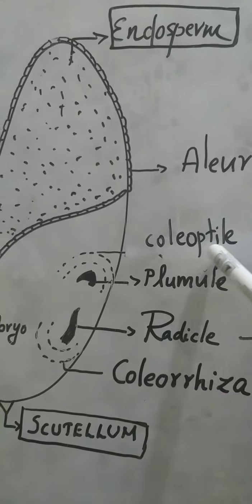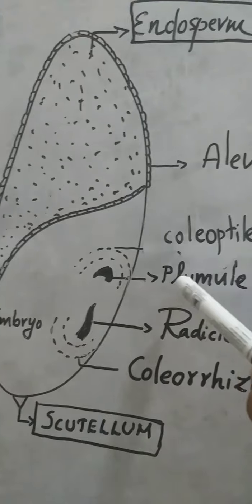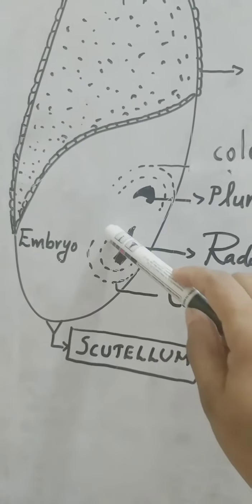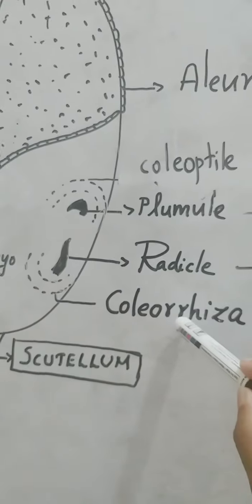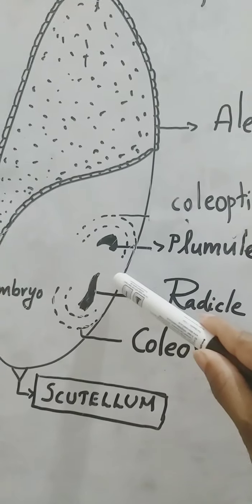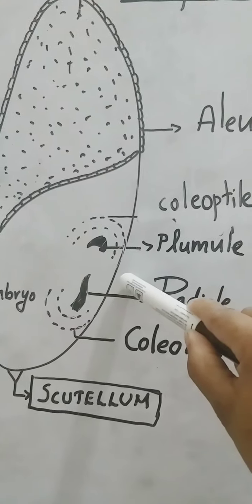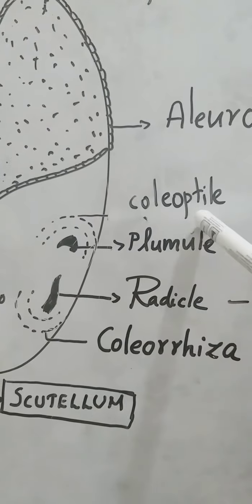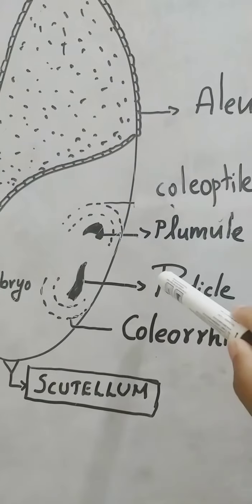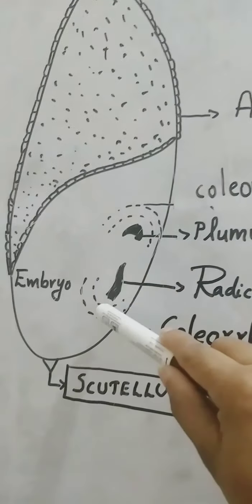These specialized structures are known as coleoptile and coleorhiza. The structure surrounding the plumule is known as coleoptile, and the structure surrounding the radicle is known as coleorhiza. A major difference between dicot and monocot embryo is that in monocot embryo we can see coleoptile and coleorhiza, which are specialized infolded structures surrounding the plumule and radicle respectively.